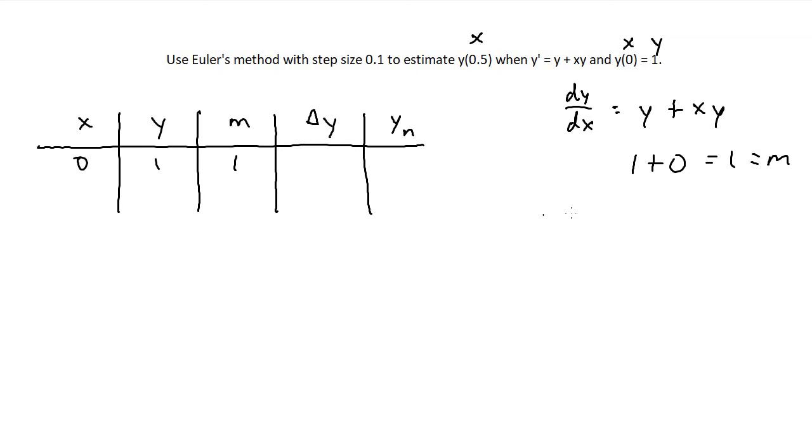Remember that in order to find delta y, delta y or the change in y over the change in x is equal to the slope. So in order to find delta y, we can just isolate it and multiply over the x. Delta y is going to be m times delta x. And delta x is just going to be the step size. Notice how it's giving us the step size of 0.1, so that will be our delta x.